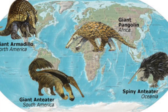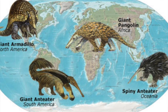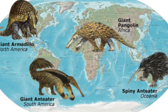The third zone is the Neotropical, covering South America, Central America, the Mexican lowlands, and the Caribbean islands. Examples of animals found here are the llama, the peccaries, the sloth, and the armadillo.